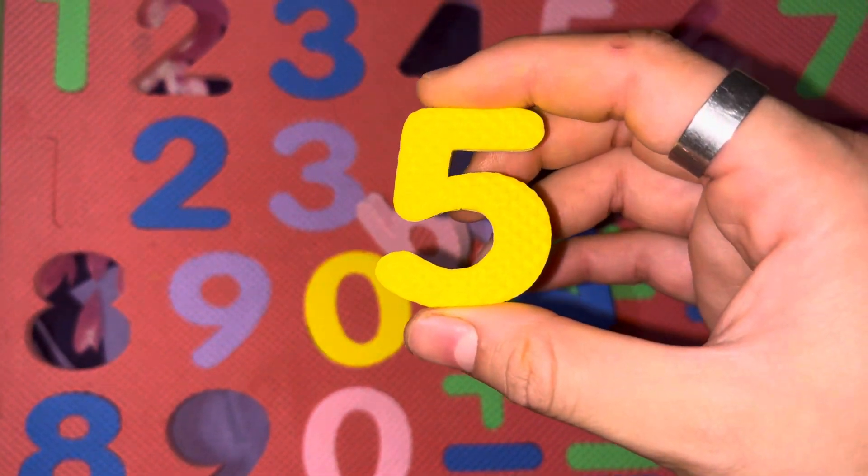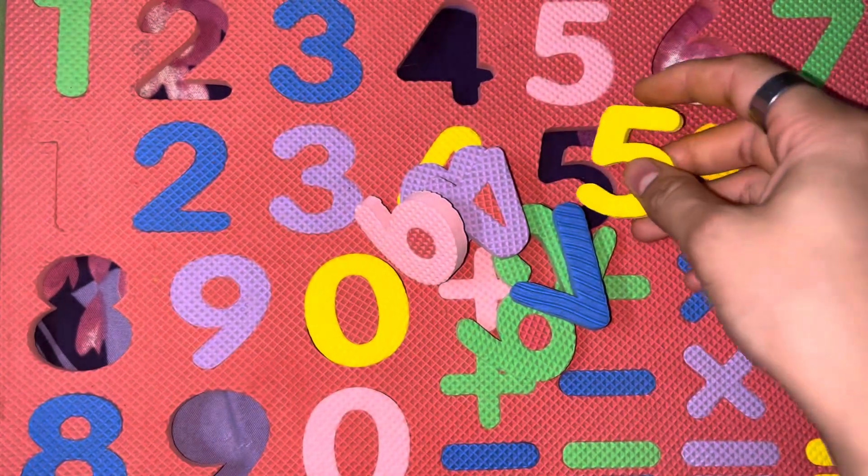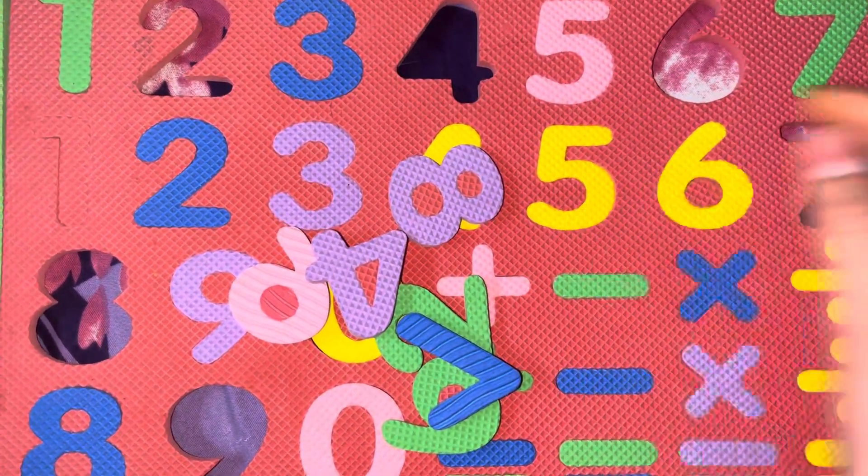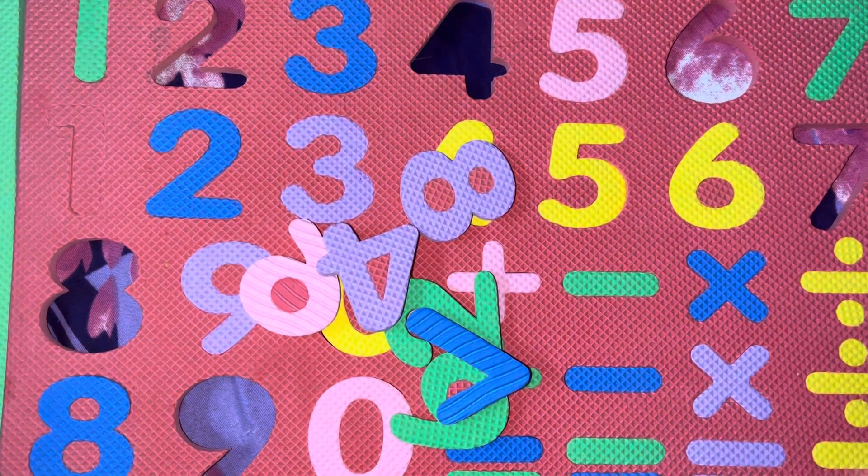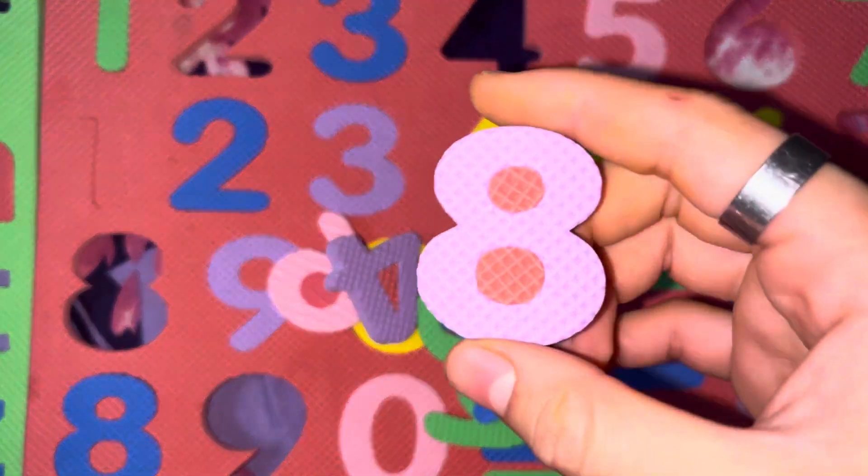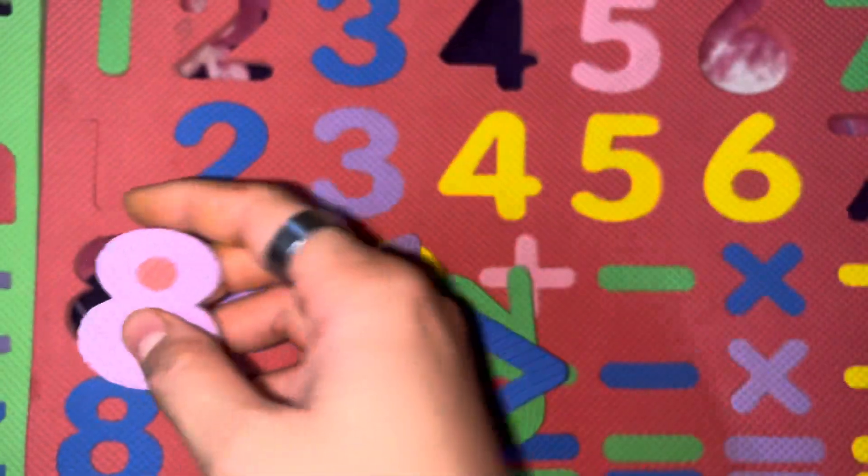Identify this number. It's five. What's the spelling of five? F-I-V-E. Five. The next number is number eight.